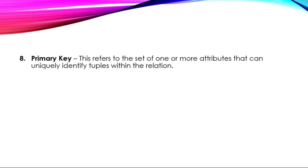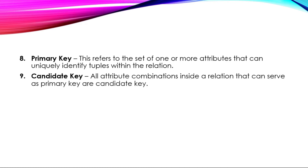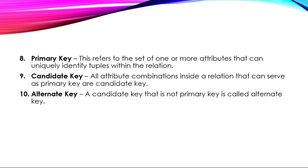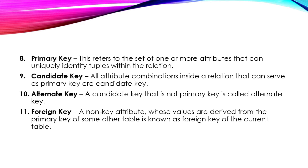Primary Key — this refers to the set of one or more attributes that can uniquely identify tuples in a relation. A primary key column will not accept duplicate values. Candidate Key — all attribute combinations inside a relation that can serve as a primary key are candidate keys; these are the columns which can act uniquely. Alternate Key — a candidate key that is not the primary key is the alternate key. Foreign Key — a non-key attribute whose values are derived from the primary key of some other table; it is used to relate or connect two tables together.